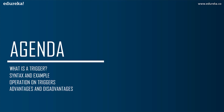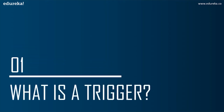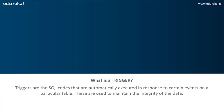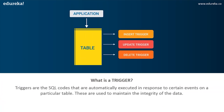So I hope the agenda is clear to you guys. Let's get started. The first topic in today's discussion is what are triggers. Triggers are SQL code that are automatically executed in response to certain events on a particular table. These are used to maintain the integrity of the data in a given table. A trigger in SQL works similar to a real-world trigger.